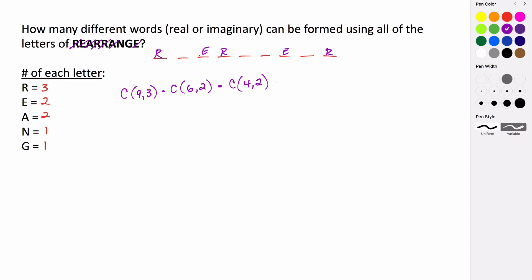And then after we've placed the A's, we have two open positions. So if we're going to place the N, there's two positions open, and we only have one N that we're putting in. So let's say we put the N here. And then lastly, we have the one position left for our one G.